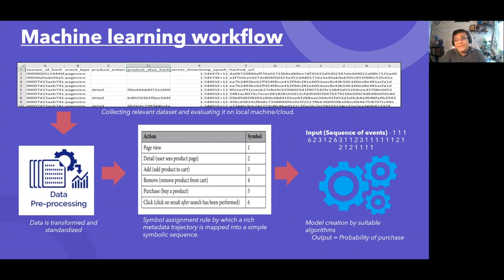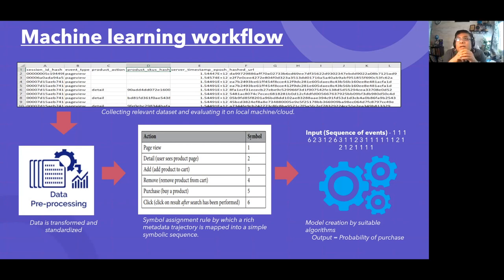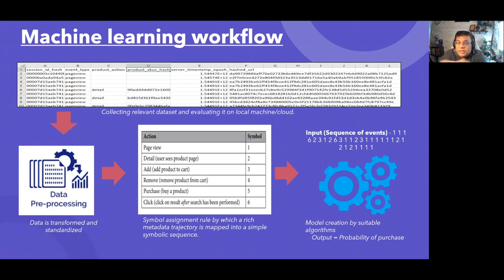It's a flywheel — it keeps rotating. They know how frequently the person visited, their buying capacity, how much they spend on e-commerce, how frequently they buy, and what type of product. Based on all that, recommendations and new product mixes keep coming.